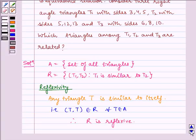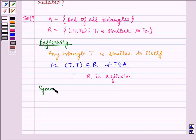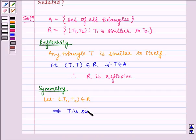Now let us check for symmetry. Let (T1, T2) ∈ R, which implies T1 is similar to T2. Also we can say T2 is similar to T1.